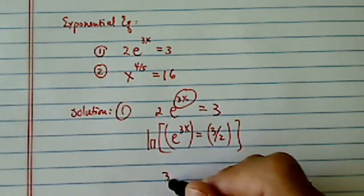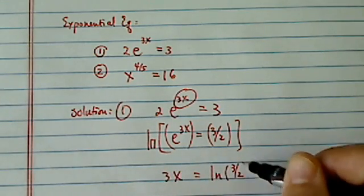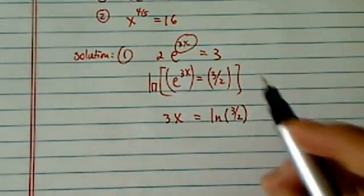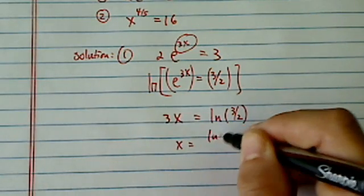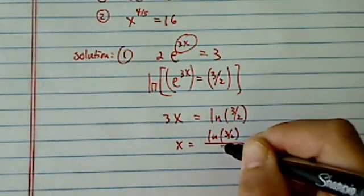So we have 3x equals natural log of 3 over 2, and then x equals natural log of 3 over 2 divided by 3.